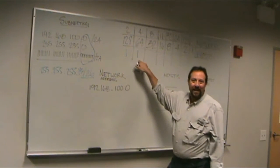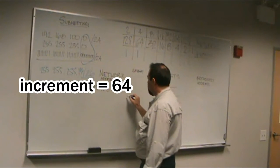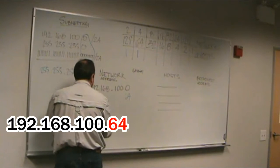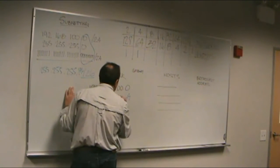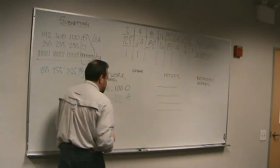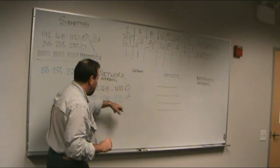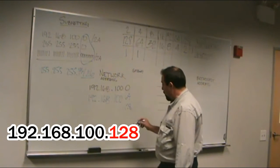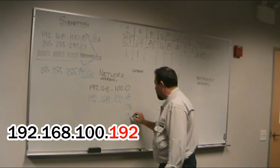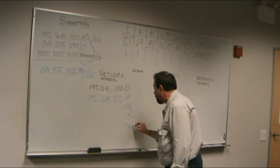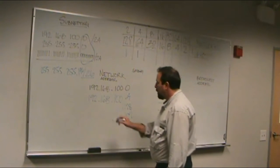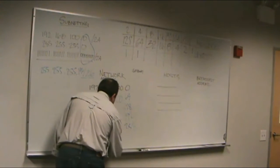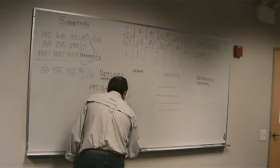Our next network would be .64, so it would be 192.168.100.64. The next one, add 64, is .128. And the last one, .192 — I could go all the way up to 255 if I wanted to. Of course, these numbers all carry down: 192.168.100.255. Why 255 instead of 256? Well, our first network started at zero — that actually counts as a digit. So if you take zero all the way to 255, you are actually using 256 digits.